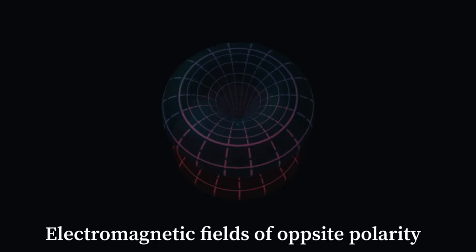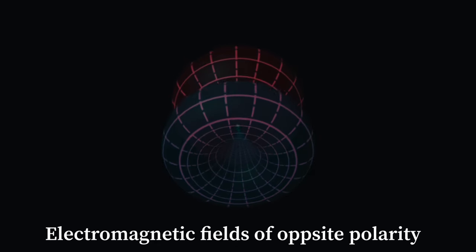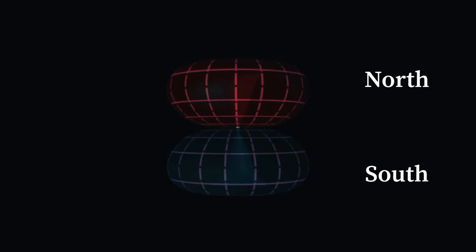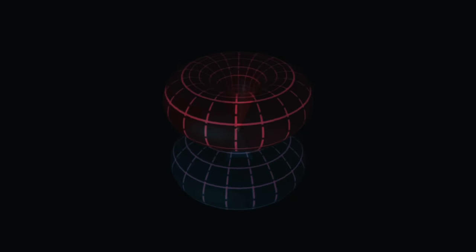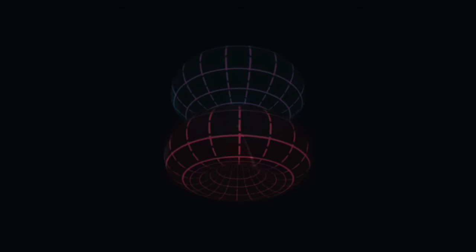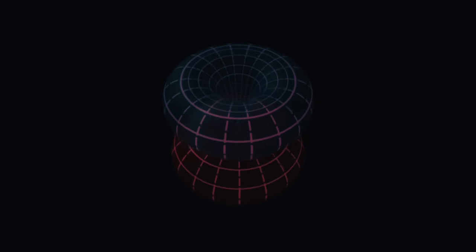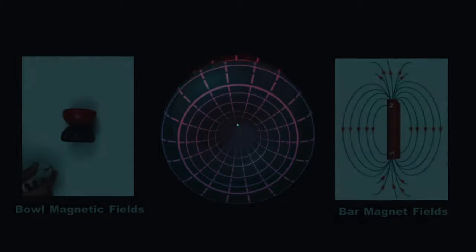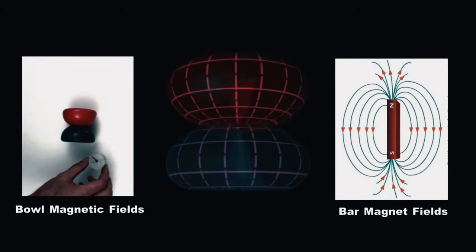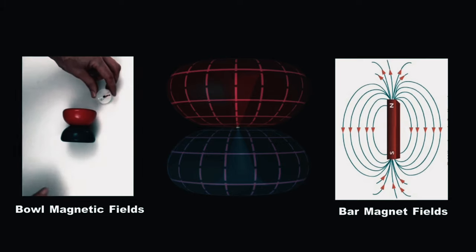In order to begin to understand Tesla, we must understand the basis for all his theories: the magnetic force. The fields shown around the green photon are electromagnetic fields of opposite polarity, with the red field being of north magnetic orientation and the blue field being of south magnetic orientation. If you were to measure these fields with a compass, their magnetic fields would appear identical to the magnetic fields of a bar magnet.